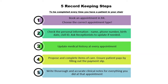The second step is to check their personal information to ensure that it's correct — the name, the phone number, the date of birth, their civil ID number. If it's not correct, you're going to ask the receptionists to update it. The third record-keeping step is to update their medical history. This has to be done at every appointment.